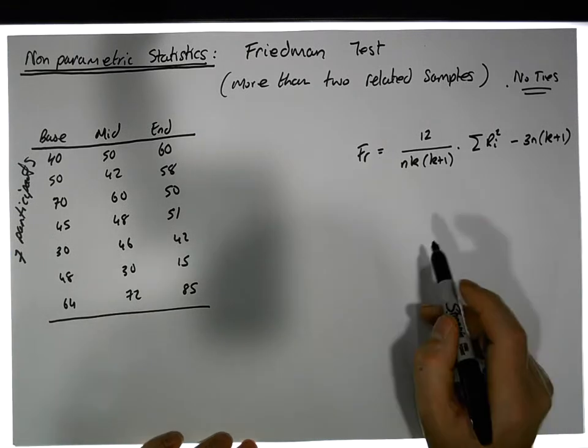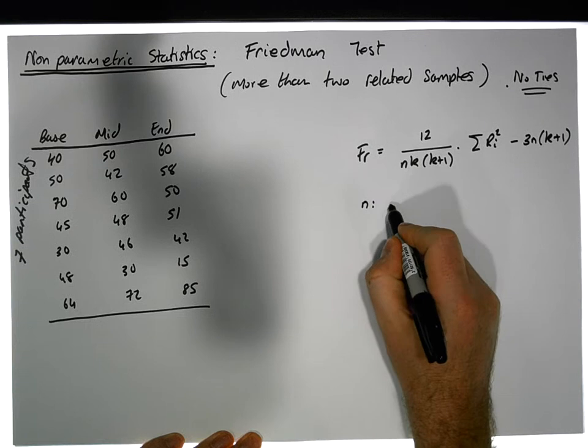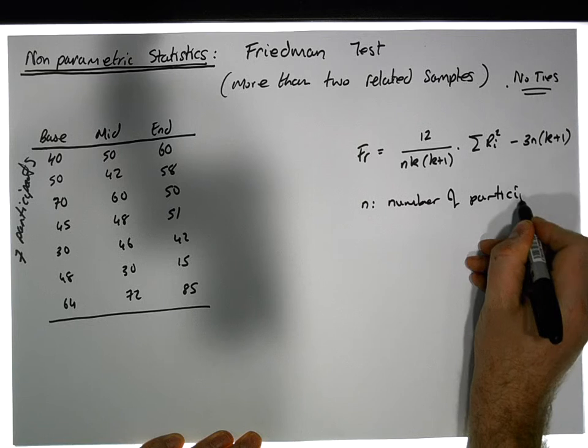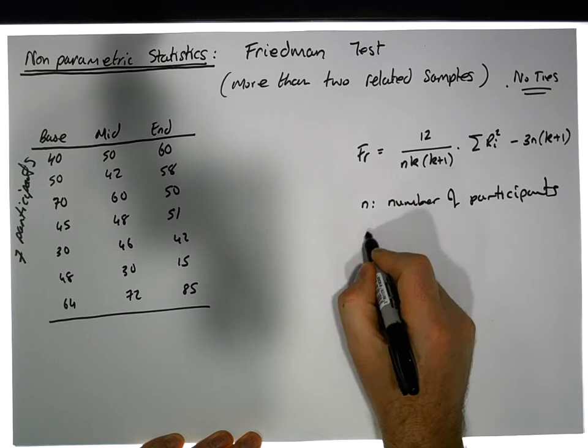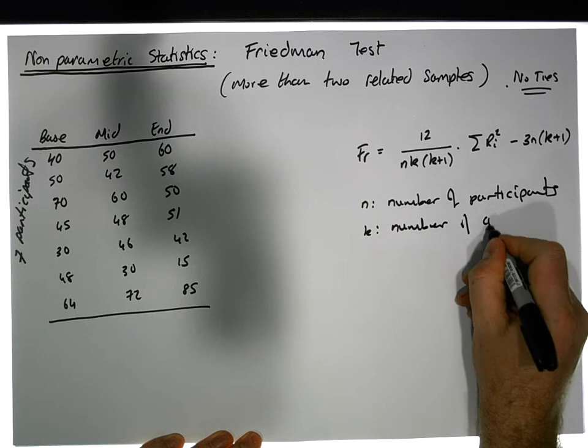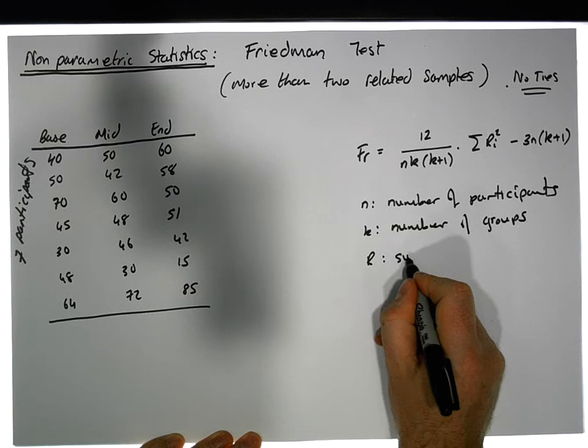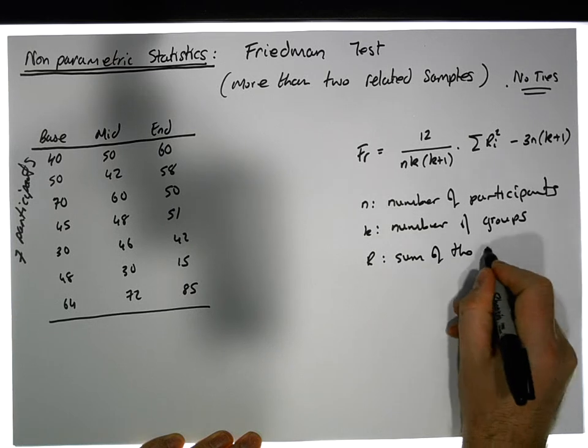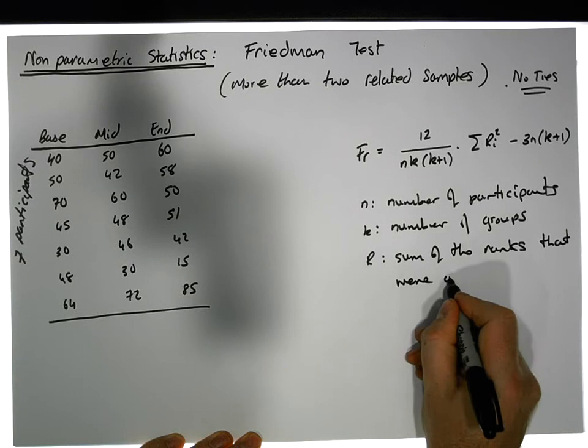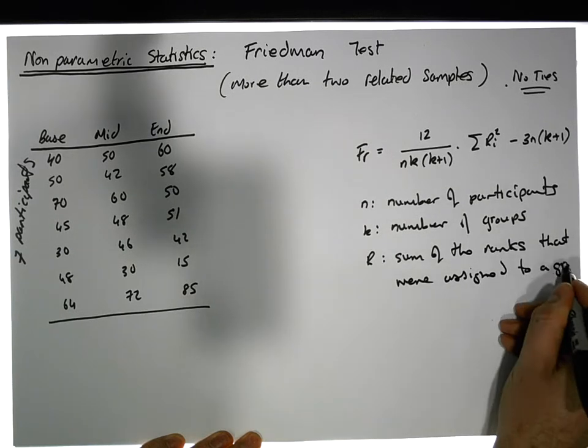So what do these parameters represent? Well, n represents the number of participants, k is the number of levels or groups, and R is the sum of the ranks that were assigned to a group.